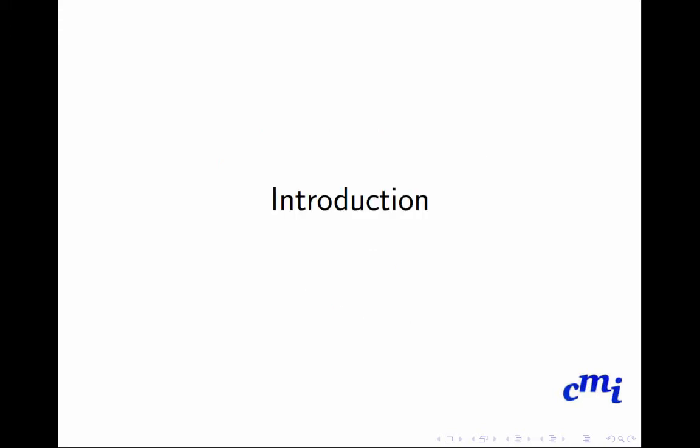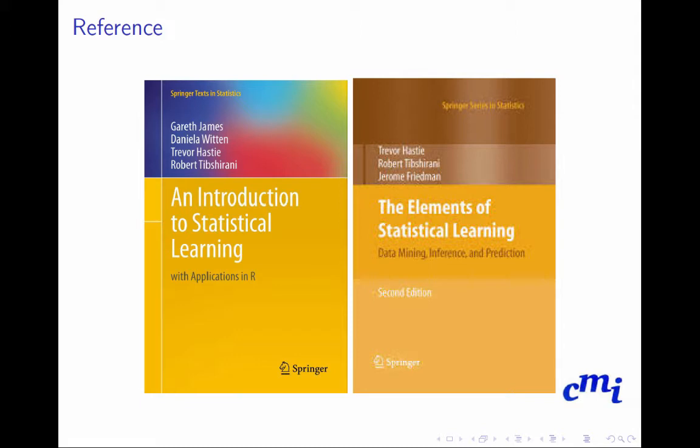In the introduction, I would like to tell you that most of the material I am going to cover in this course I have taken from mainly two books. One is by James, Witten, Hastie, and Tibshirani: An Introduction to Statistical Learning with Applications in R. Another book is Hastie, Tibshirani, Friedman: Elements of Statistical Learning - Data Mining, Inference, and Prediction. This book is written at a beginner level, and this book is slightly at a higher advanced level. You can read both books and pick where you feel comfortable. I'm taking material from these two books, which are effectively written by the same group of people.